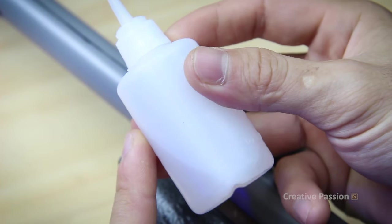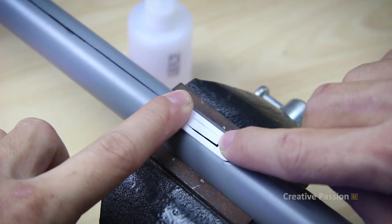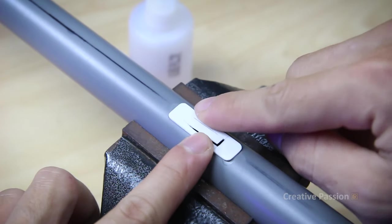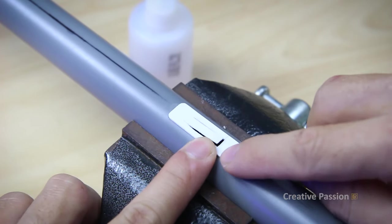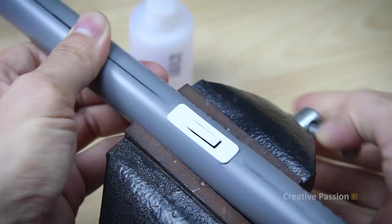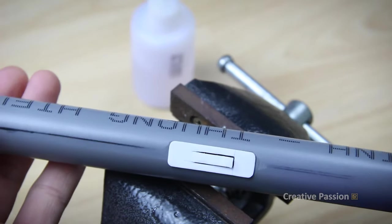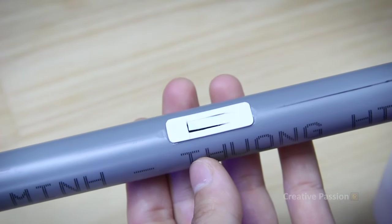Here, I will use 502 glue to fix the plastic reed onto the flute body. And in this step we need to be careful, absolutely do not let 502 glue touch the reed blade. Now let's rotate and test blow it.